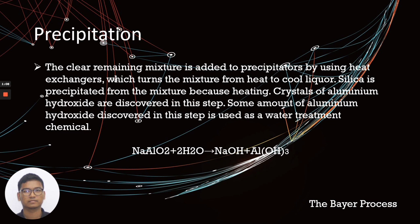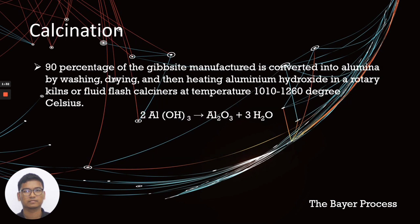After that, precipitation. The clear remaining mixture is added to precipitators by using heat exchangers which turns the mixture from heat to cold liquor. Silica is precipitated from the mixture because heating crystals of aluminum hydroxide are discovered in this step. Some amount of aluminum hydroxide recovered in this step is used as a water treatment chemical.